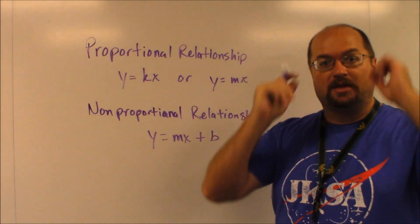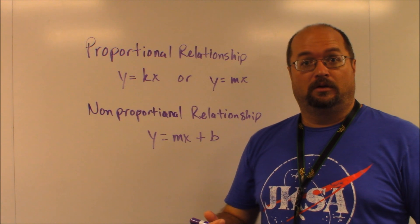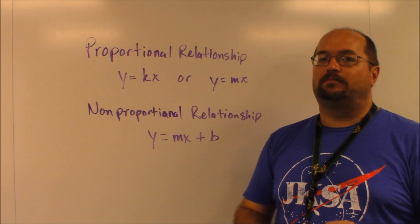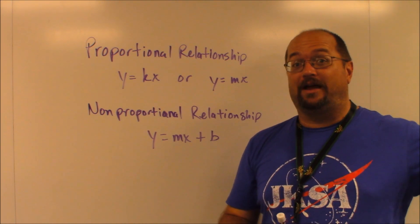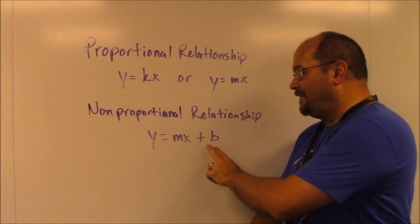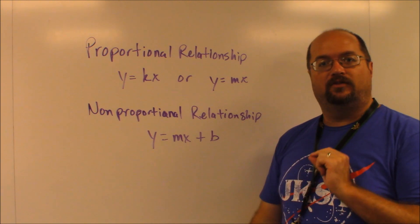So for example, somebody pays a babysitter $10 per hour, that's it, that's a proportional relationship. But if someone pays a babysitter $10 per hour plus $20 for gas money because they live way out in the country, well then that would be a non-proportional relationship because you have that added cost on there that's just a flat fee.